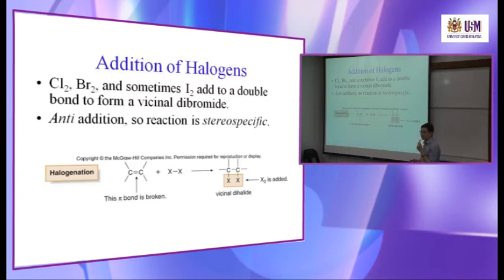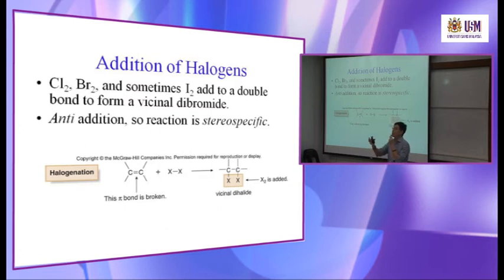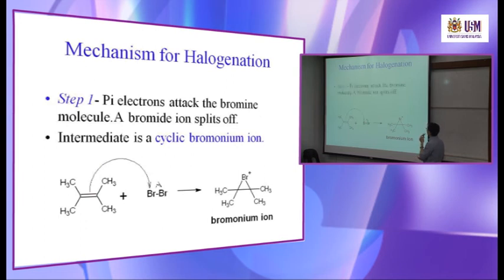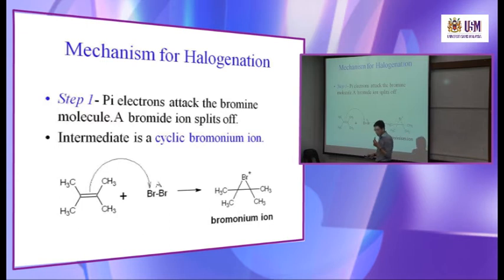Stereospecific means it tends to form a single type of product. Stereoselective — sometimes we call it — it might form one major product and one minor product. Specific means only one product. So how is the mechanism of halogenation? The step one is the pi electrons of the double bond — for this electrophilic addition reaction, the first step is always the attack of the double bond on the electrophile. In this case the electrophile is Br₂.